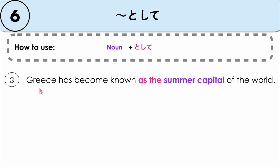Next example: Greece has become known as the summer capital of the world. Here, toshite means 'known as' or 'famous as' nani nani. In this case, famous as the summer capital.